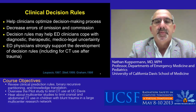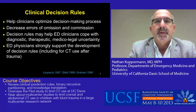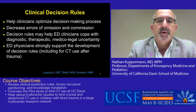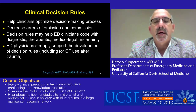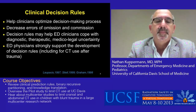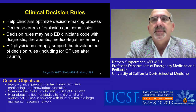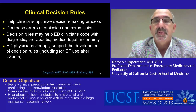A few words about clinical decision rules. These rules help clinicians in the optimized decision-making process. They help decrease errors of omission — errors where you don't do something that you should — and errors of commission, which are errors in which you do something that you shouldn't. Decision rules can help emergency physicians cope with diagnostic, therapeutic, and medical legal uncertainty. And in surveys, emergency department physicians strongly support the development of these clinical decision rules, including those for CT use after trauma.